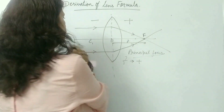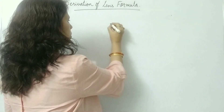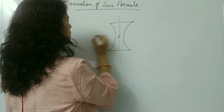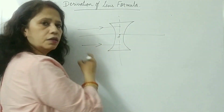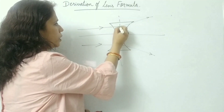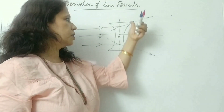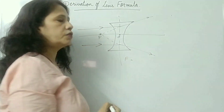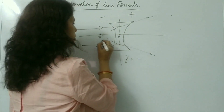For a concave lens, if rays are parallel to the principal axis, after refraction they bend and are not meeting each other. They appear to meet at one point — this is the principal focus. Since the rays are being diverged, this is called a diverging lens, and its focal length F will be negative.